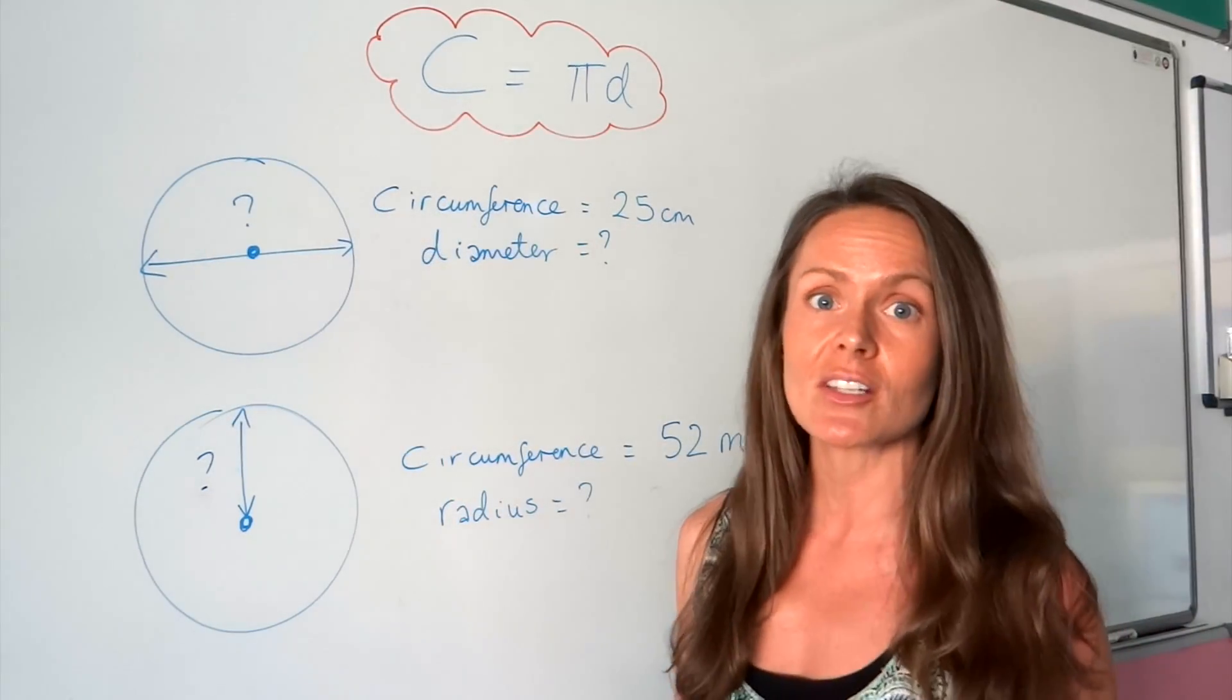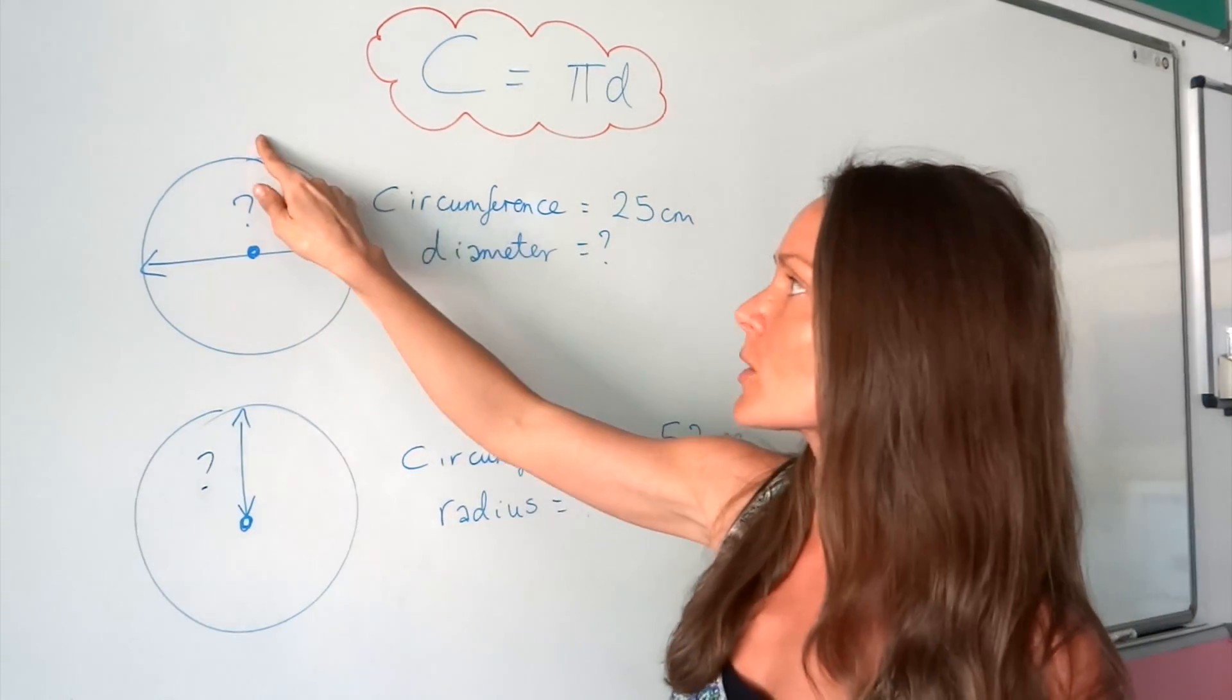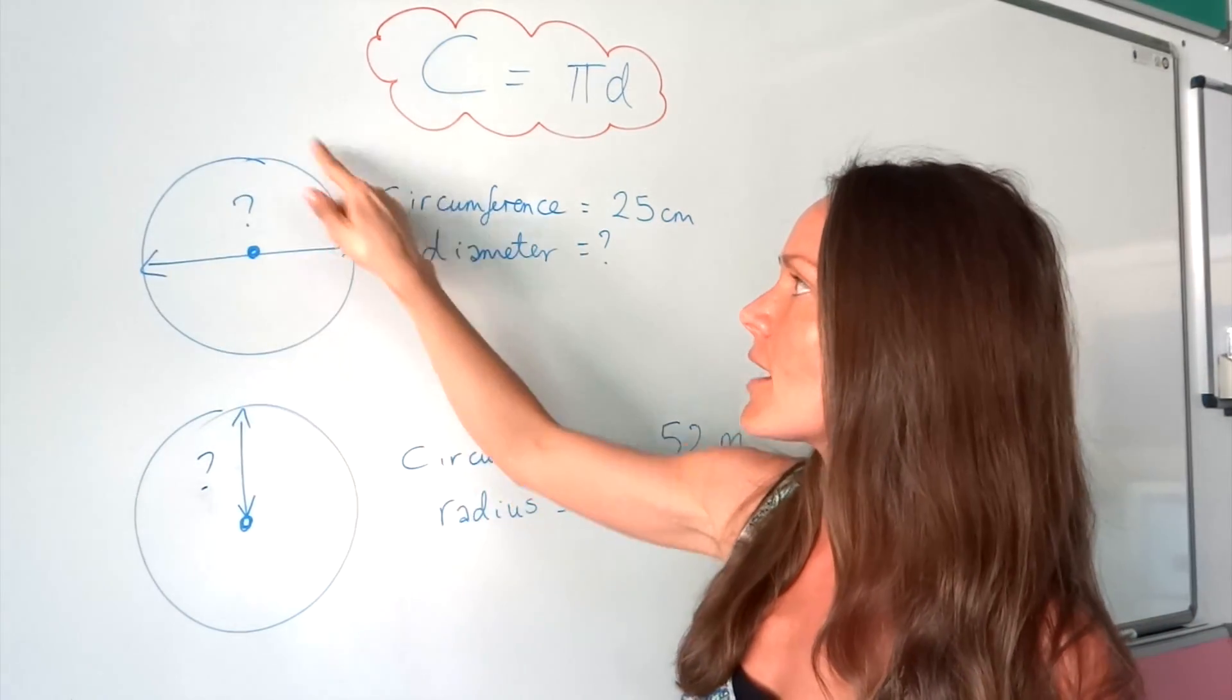Circumference is just another word for perimeter when we're talking about circles, so it's the distance around here.